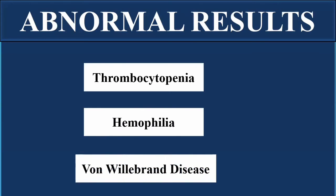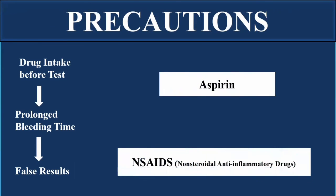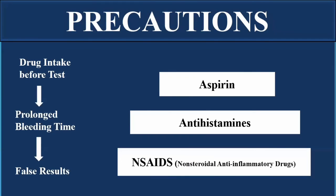Another condition is Von Willebrand disease, in which the Von Willebrand factor — which is involved in clotting — is deficient, causing increased bleeding time. As a precaution, certain drugs can give false positive results by increasing the bleeding time. The patient must report to the physician about the intake of these drugs to avoid false positive results.